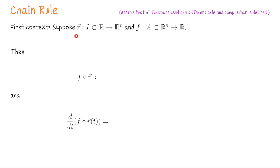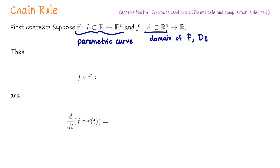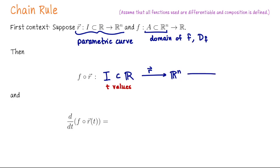For the first context, suppose R is a vector-valued function of one variable — in other words, suppose R is a parametric curve — and suppose that F is a scalar-valued function of n inputs, where the domain of F is some subset A of R^n. Then the composition F of R of T begins in the domain of R, goes to R^n, because the first function's action is the one on the right. Assuming this composition is defined, we've landed in the domain of F, and then F takes us from R^n back to scalars.